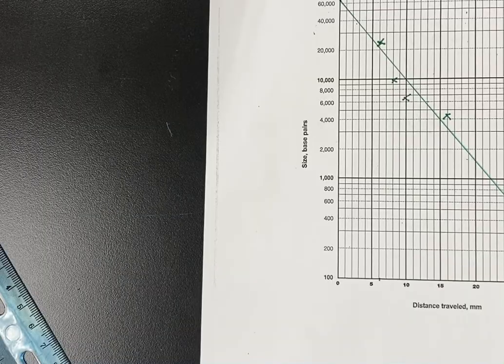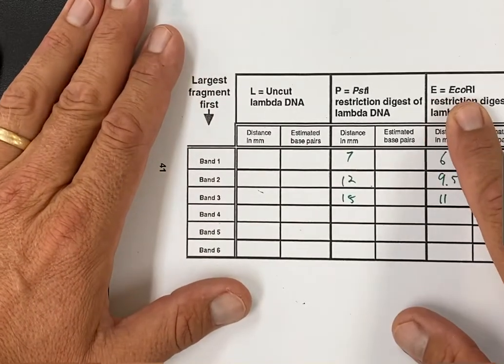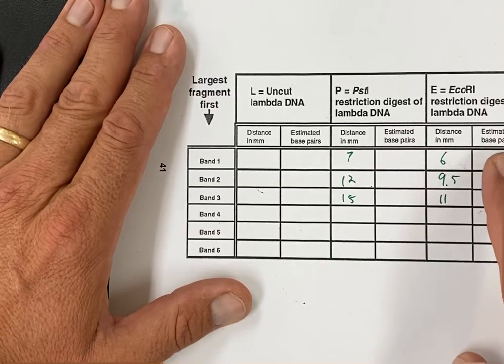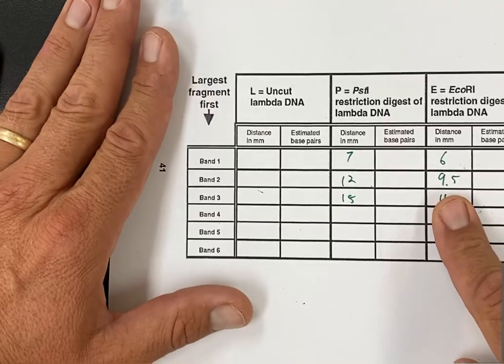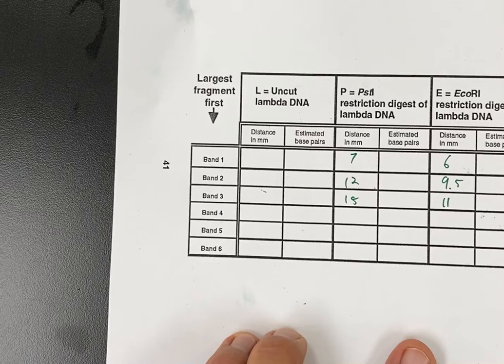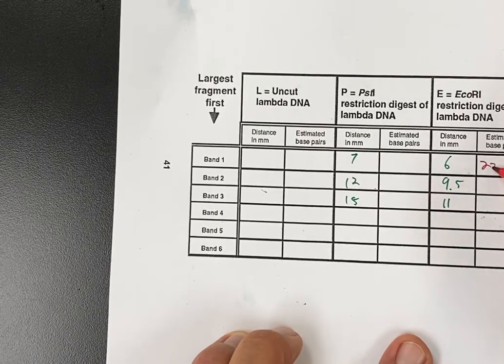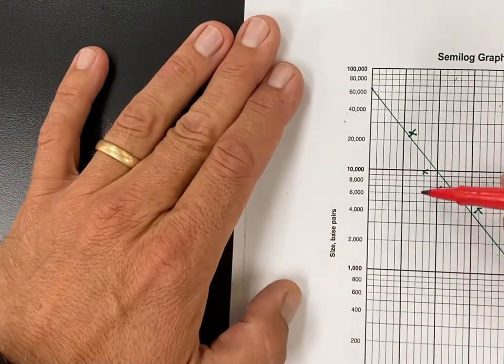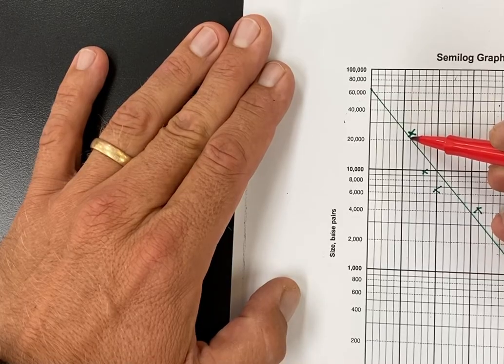So how I use this is, now if I come back over here and I look at my bands from the EcoRI cut, I can now estimate how big they are based on the distance they ran. So that first one was at about six millimeters, so I know it's probably somewhere around twenty-three thousand. I can go look on here, so six millimeters, if I come up six millimeters is just over twenty thousand, so that's band one.